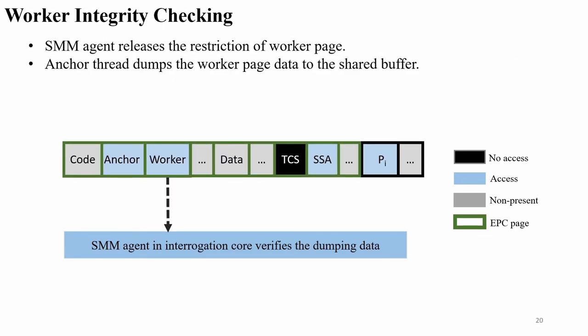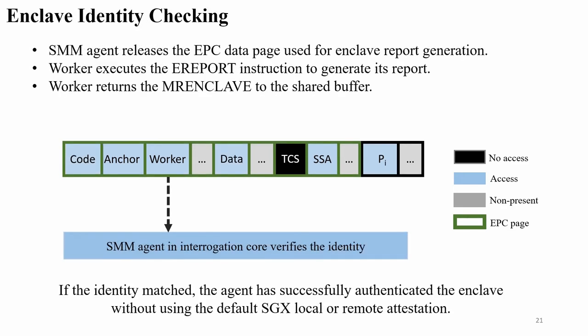After the ANC is trusted, the SMM agent releases the restriction on the worker page, and the ANC code dumps the worker page data to the shared buffer. The SMM agent then performs a hash operation to verify the dumped data from the worker. After checking the ANC and the worker code, the SMM agent releases the EPC data page used for enclave report generation, and then the worker executes the EREPORT instruction to generate its report. The worker retains the MR_ENCLAVE value from the report to the shared buffer. If the identity matches in the SMM agent, the engine has successfully authenticated the enclave without using SGX local or remote attestation.